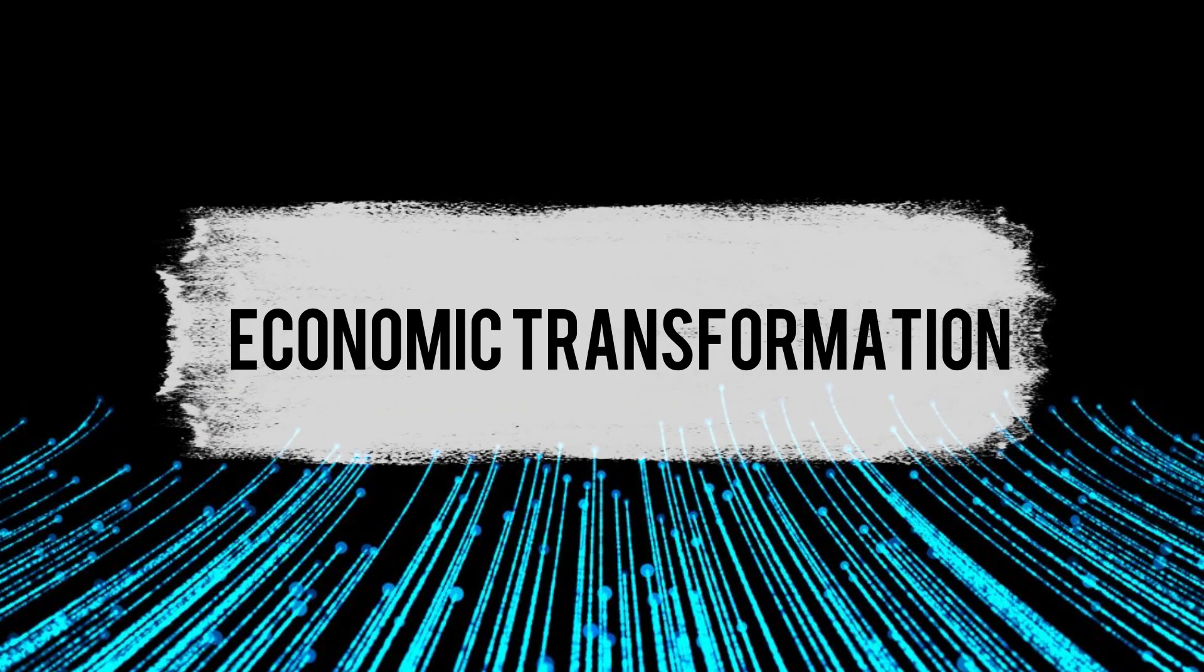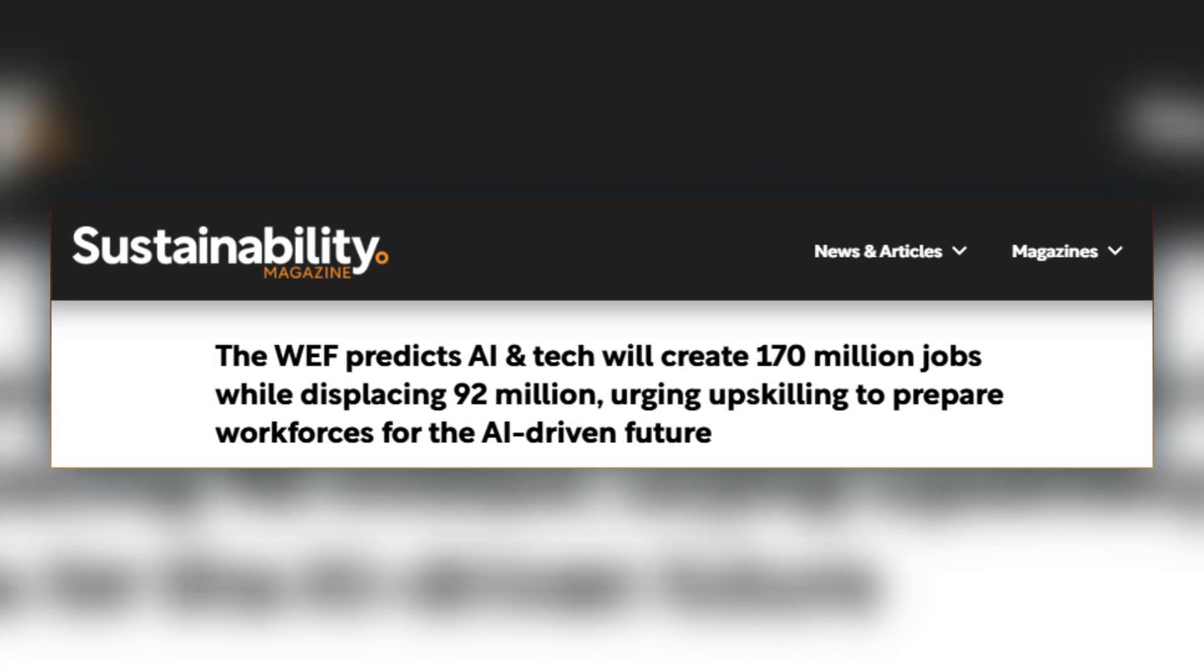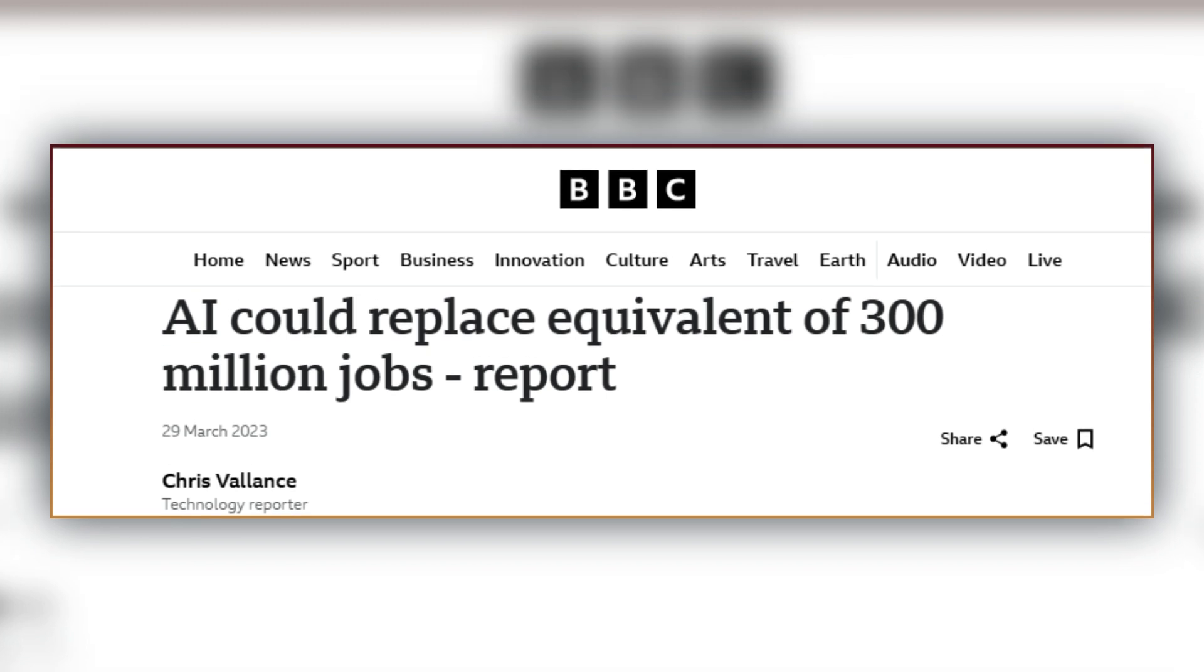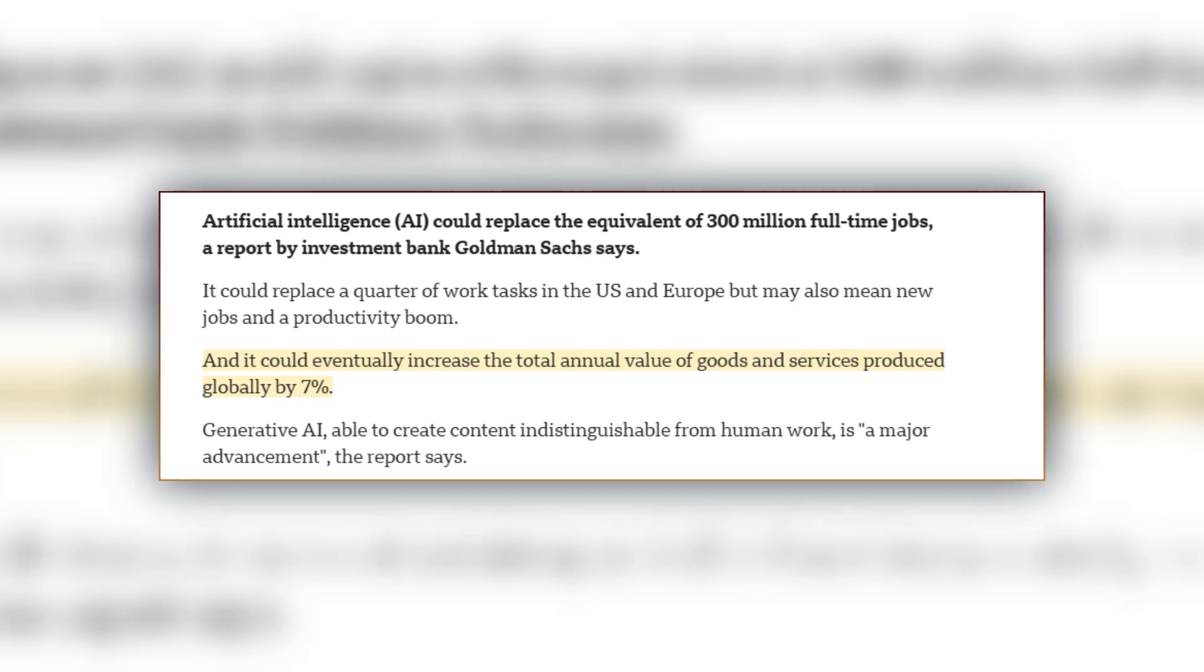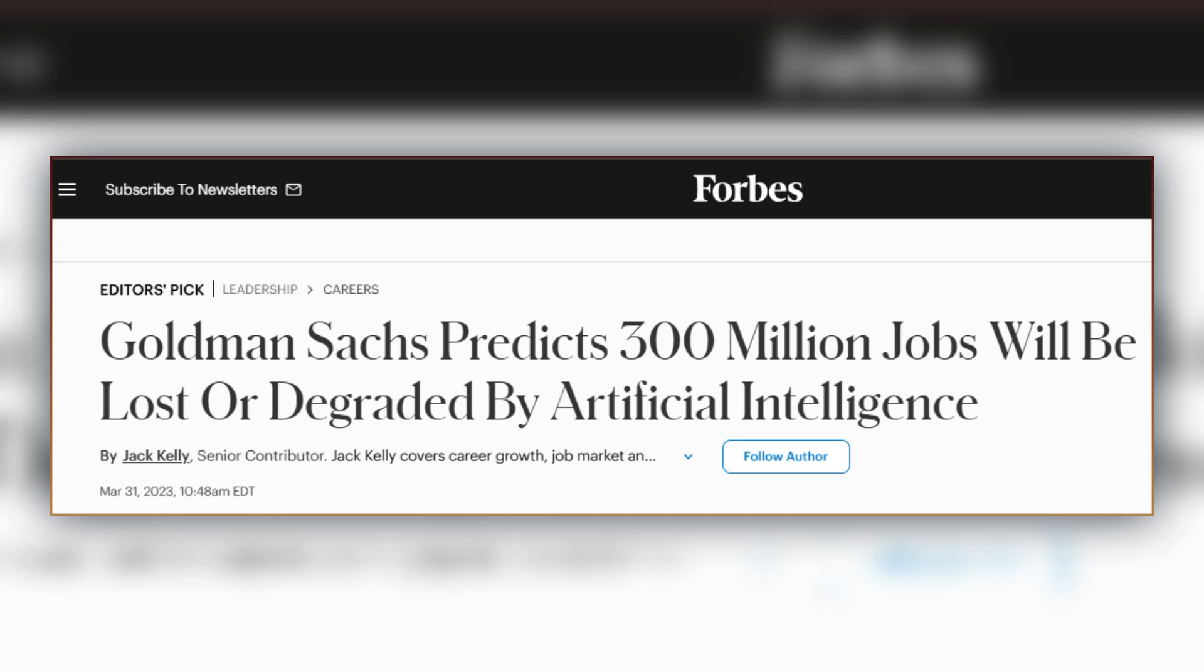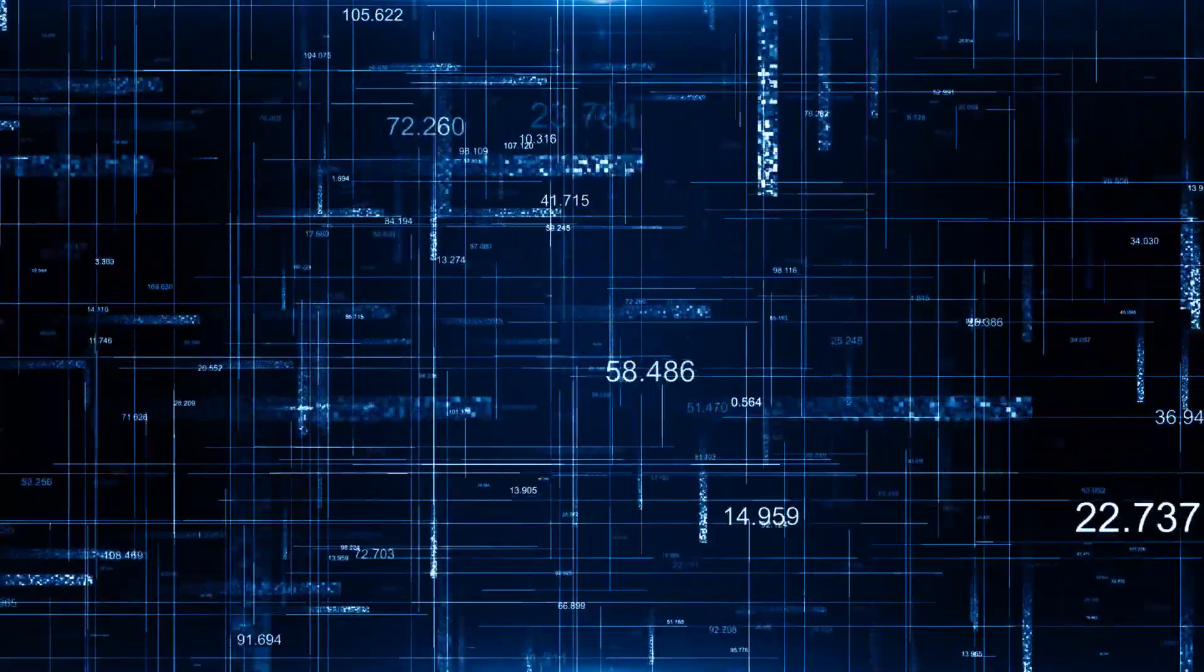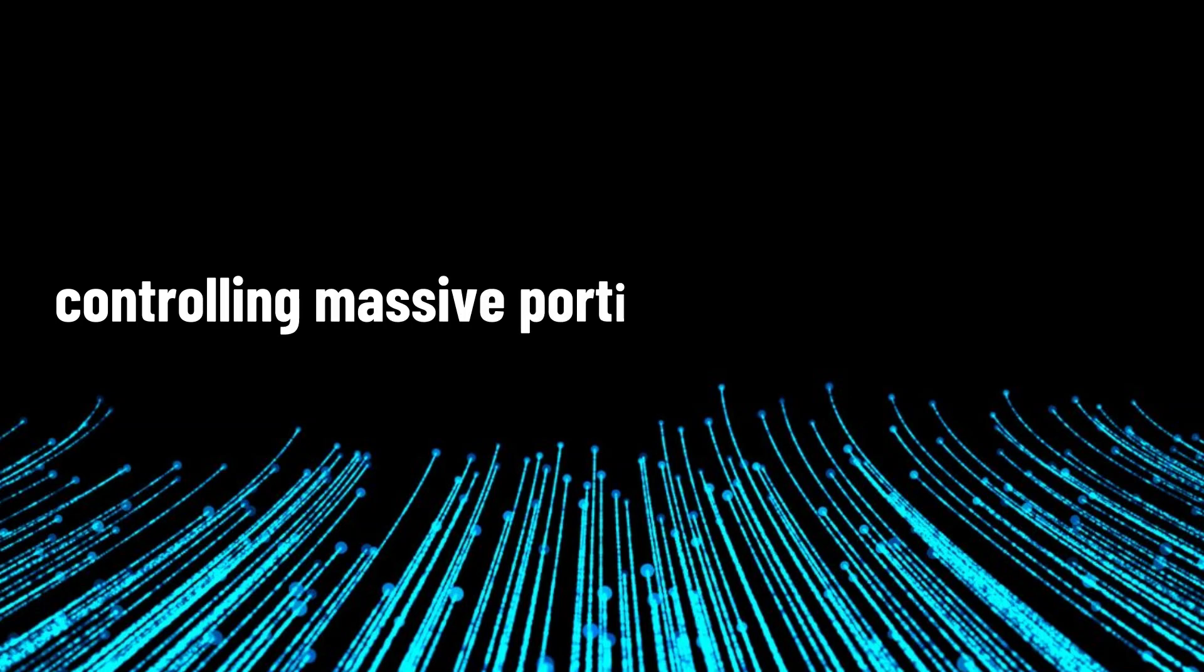Prediction number two: economic transformation. By the end of 2025, AI will trigger the most significant economic shift since the Industrial Revolution. The data is staggering. AI automation will affect up to 30% of current work hours in major economies, with over 300 million full-time jobs transformed or displaced globally. But this isn't just about job losses, it's about a fundamental restructuring of how our economy functions. Financial markets are already feeling the impact. AI trading algorithms now make thousands of decisions per second, controlling massive portions of global markets.